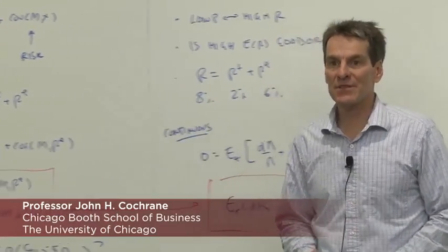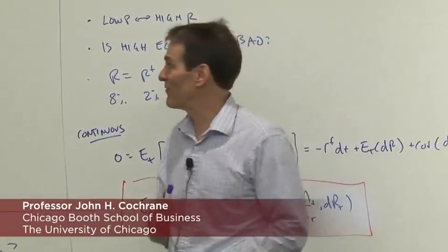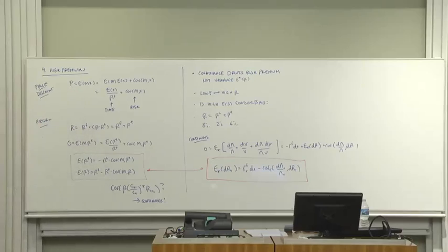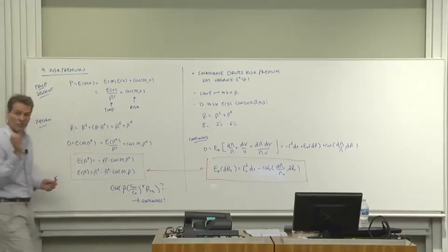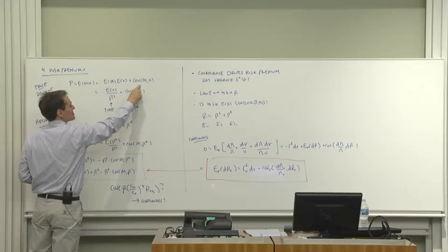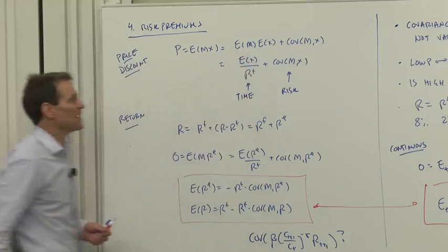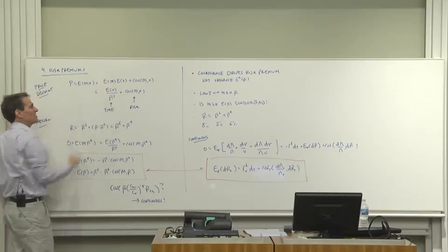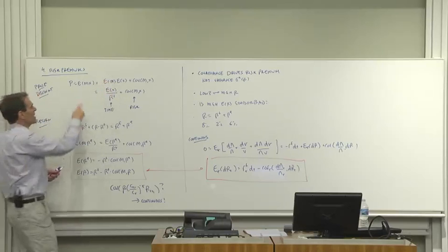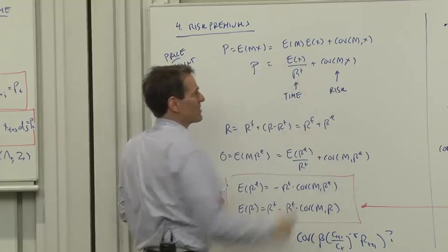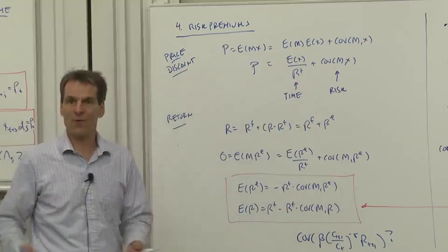Let's think about risk premiums — they are really the heart of finance. Starting with our basic price equals expected discounted payoff formula, I want to break it up. I'll break E of MX up using the definition of covariance: E of MX minus EM·EX. Turning that around, we can break the price into two components: E of X over RF, and the covariance of M and X.